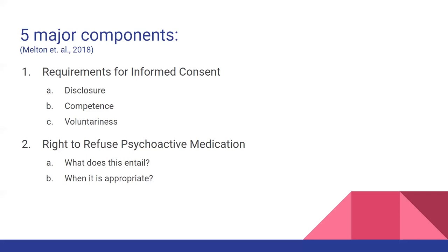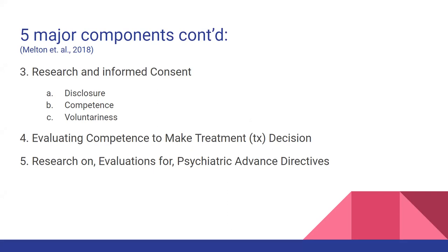This lecture includes five major components that we learned about in Melton et al. from 2018, our textbook. The first is requirements for informed consent, which includes disclosure, competence, and voluntariness. The second is the right to refuse psychoactive medications. The third is research and informed consent, also covering disclosure, competence, and voluntariness. The fourth is evaluating competence to make treatment decisions. And the fifth is research on evaluations for and psychiatric advanced directives.